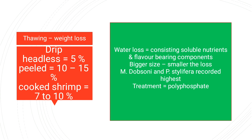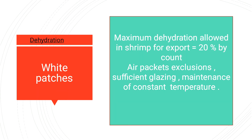Dehydration is also a problem seen during seafood processing, where white patches can appear. The maximum dehydration allowed in shrimp for export is 20 percent by count. Air-packet exclusion, sufficient glazing, and maintenance of constant temperature can reduce these dehydration problems.